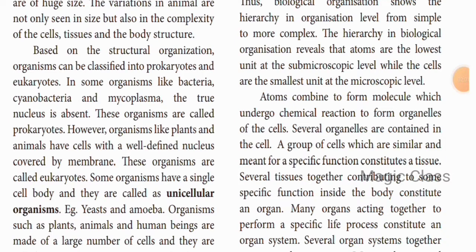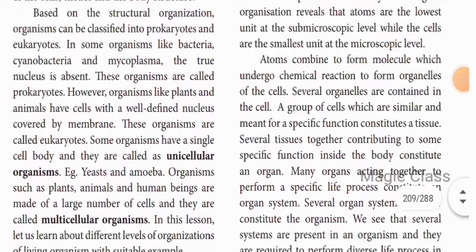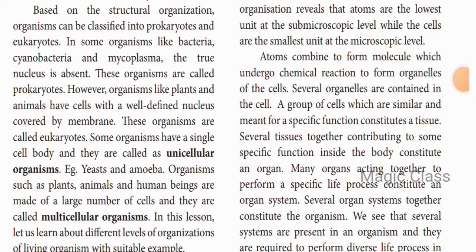Based on the presence of a well-defined nucleus, organisms are differentiated into eukaryotes and prokaryotes. In some organisms like bacteria, cyanobacteria, and mycoplasma, the true nucleus is absent — these are called prokaryotes. In organisms like plants and animals, they have a well-defined nucleus covered by a nuclear membrane — these are called eukaryotes. Some organisms have a single-cell body and are called unicellular, for example amoeba. Plants, animals, and human beings have a large number of cells and are called multicellular organisms.